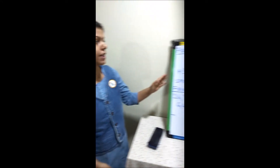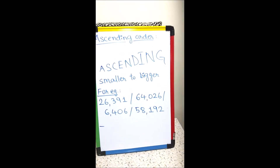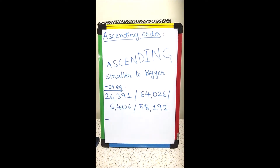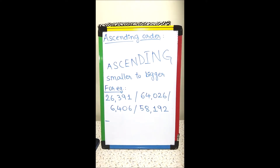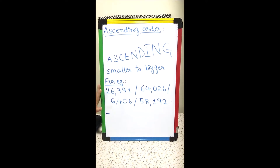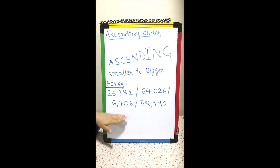After comparing numbers, let us look at ascending order and descending order. Ascending order means arranging from smaller to bigger. Here I've taken one example — you can see there are four numbers: 26391, 64026, 6406, and 58192.